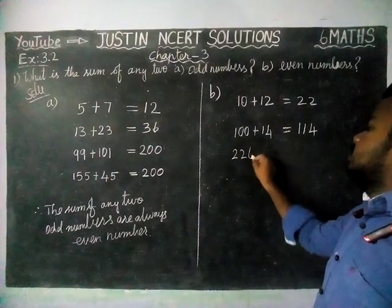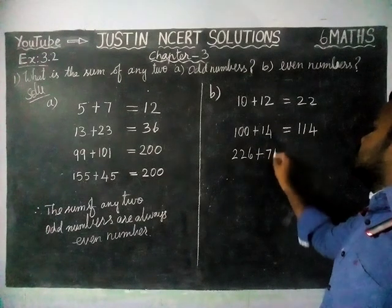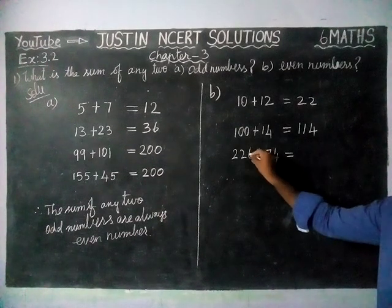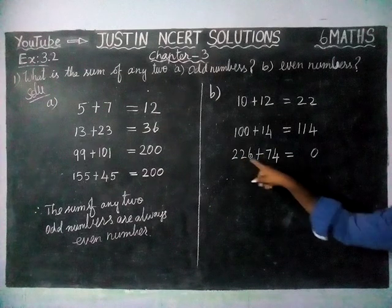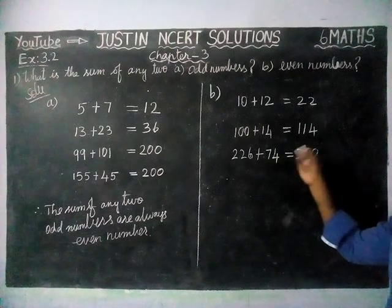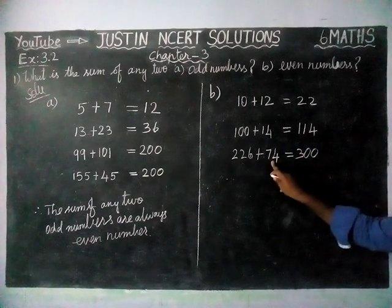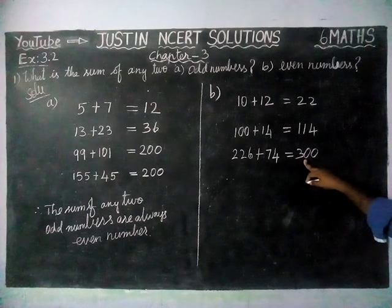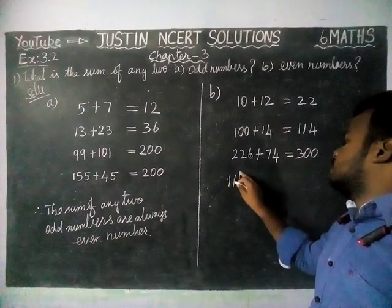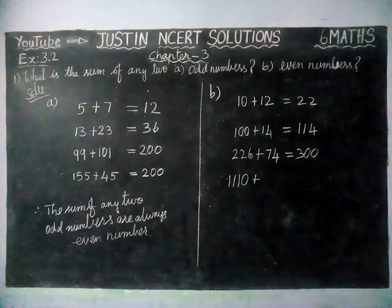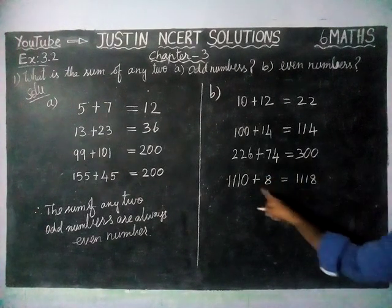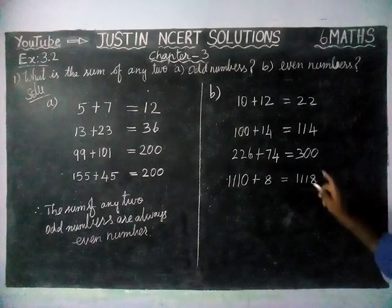Next, 226 plus 74. When we are adding these two: 6 plus 4 is equal to 10, carry 1; 7 plus 2 is 9, plus 1 is 10, carry 1; 2 plus 1 is equal to 3. So 226 plus 74 equals 300. 226 and 74 are even numbers, and the answer is also an even number. Next, 1100 plus 8 is equal to 1108. When we are adding two even numbers, again we are getting an even number only in the answer.